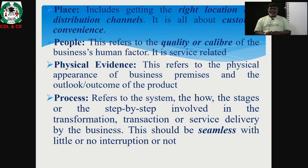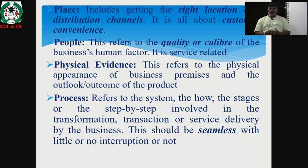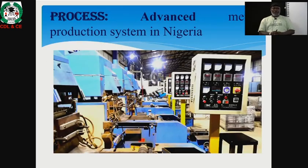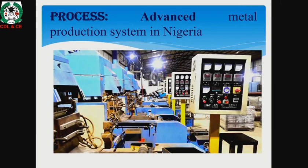Another significant element of the marketing mix is process. Process refers to the production system, the marketing system — the how, the stages involved in carrying out operations or transactions. The essence of the process is that there should be little or no interruption — it should be seamless. When a customer comes in, he or she should enjoy seamless and uninterrupted service that will wow them and make them want to come back. The slide here shows a production process of an assembly plant in Nigeria — clean, serene and neat.